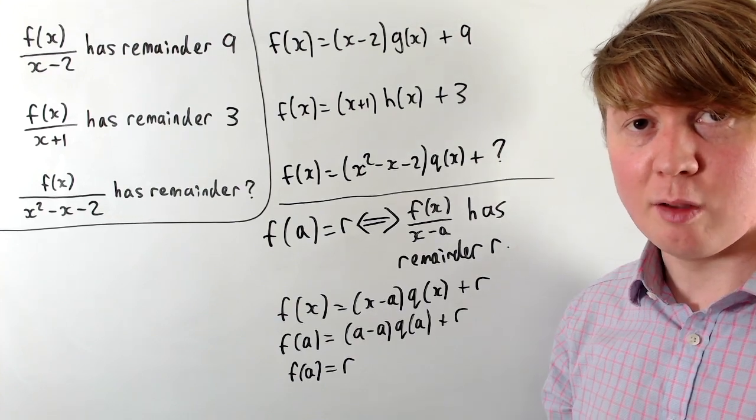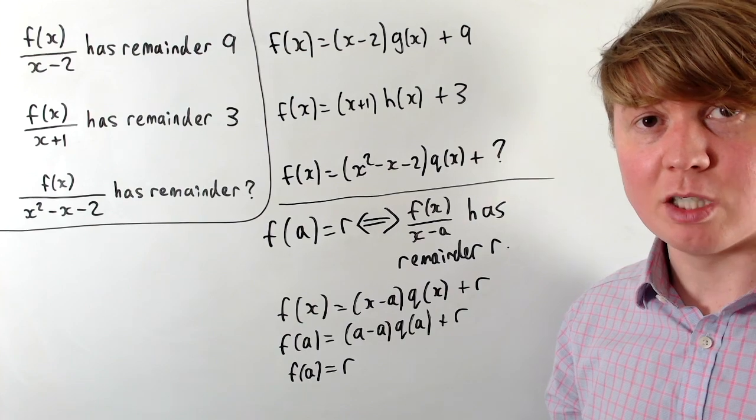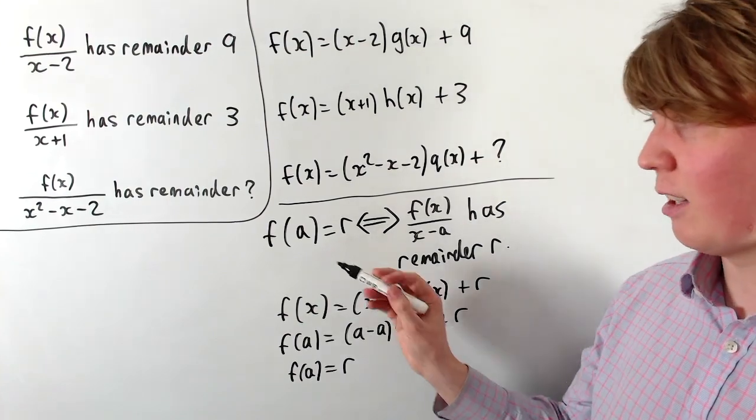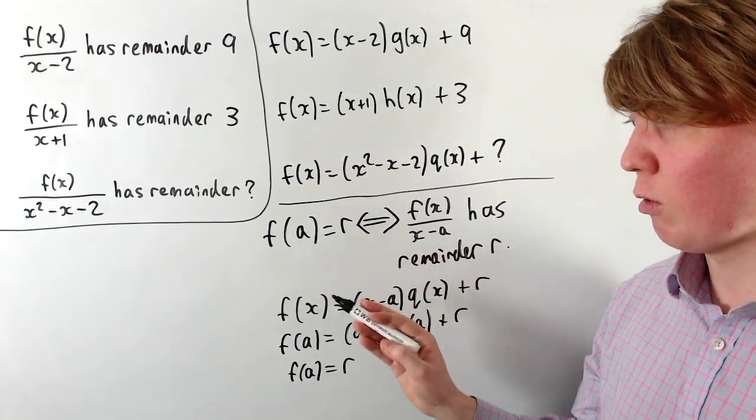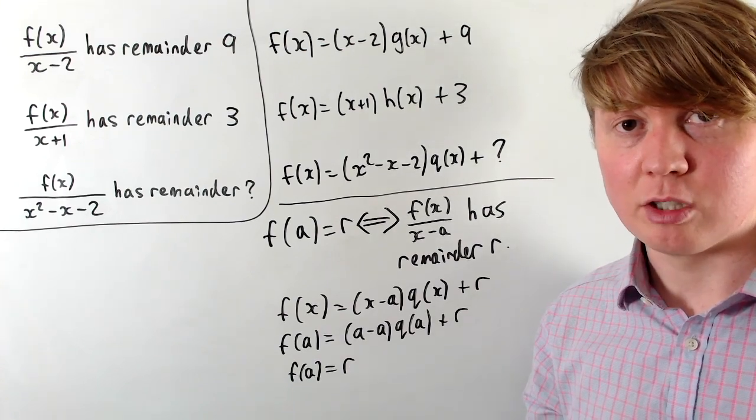This is also related to the factor theorem. If we didn't get a remainder, this would tell us that we had a factor. So this is exactly how if f(a) equals 0, then x minus a is a factor of our function f.